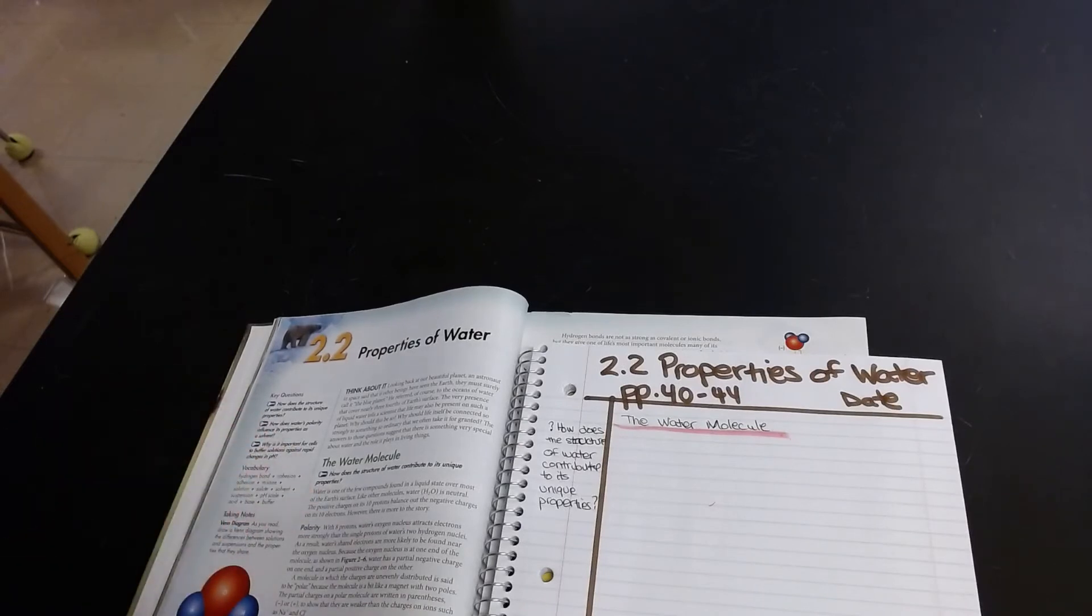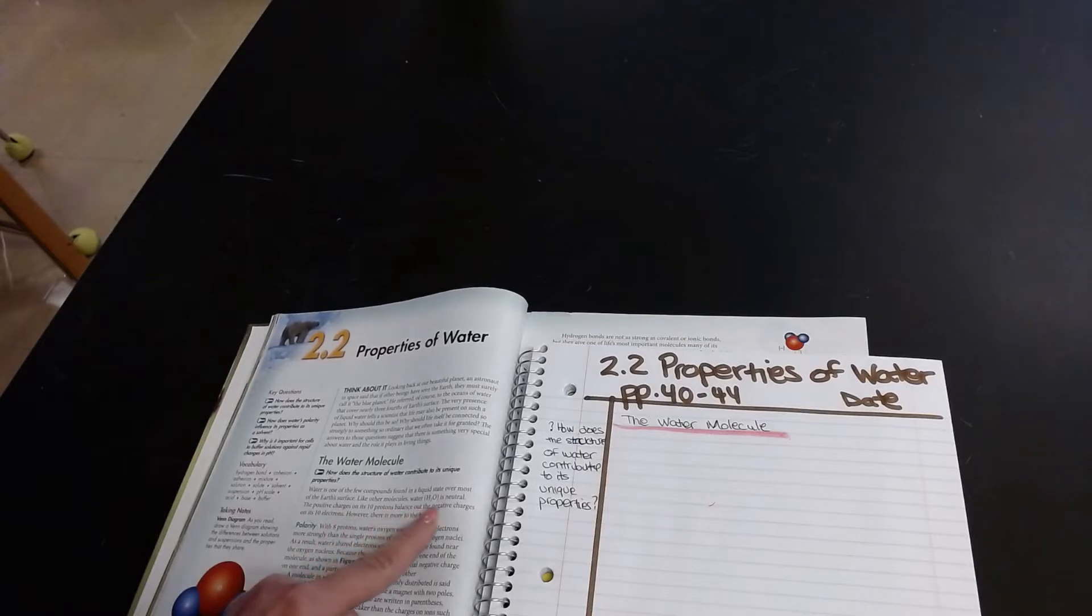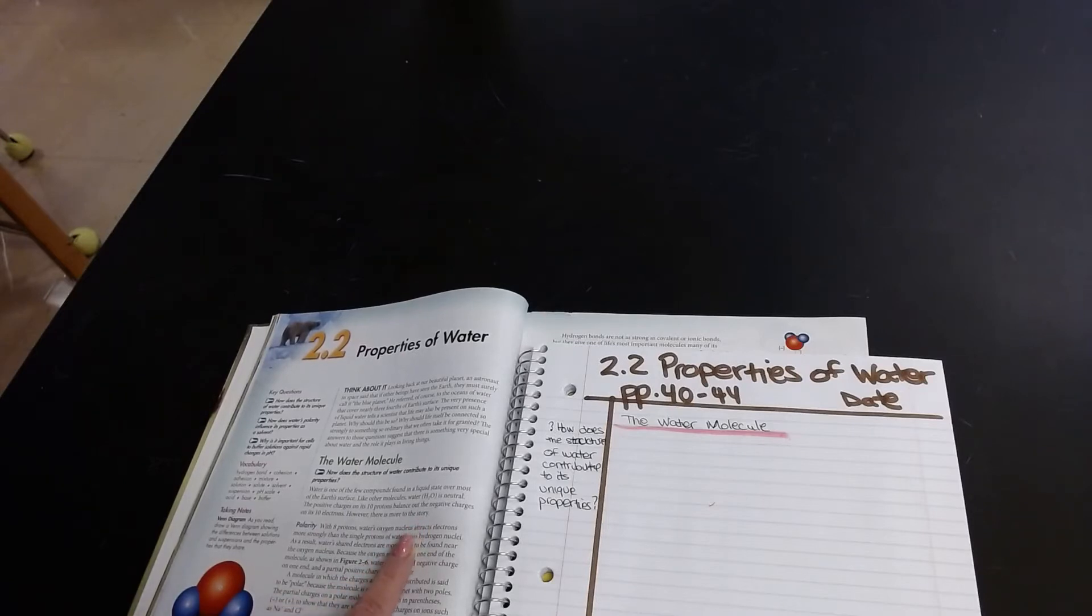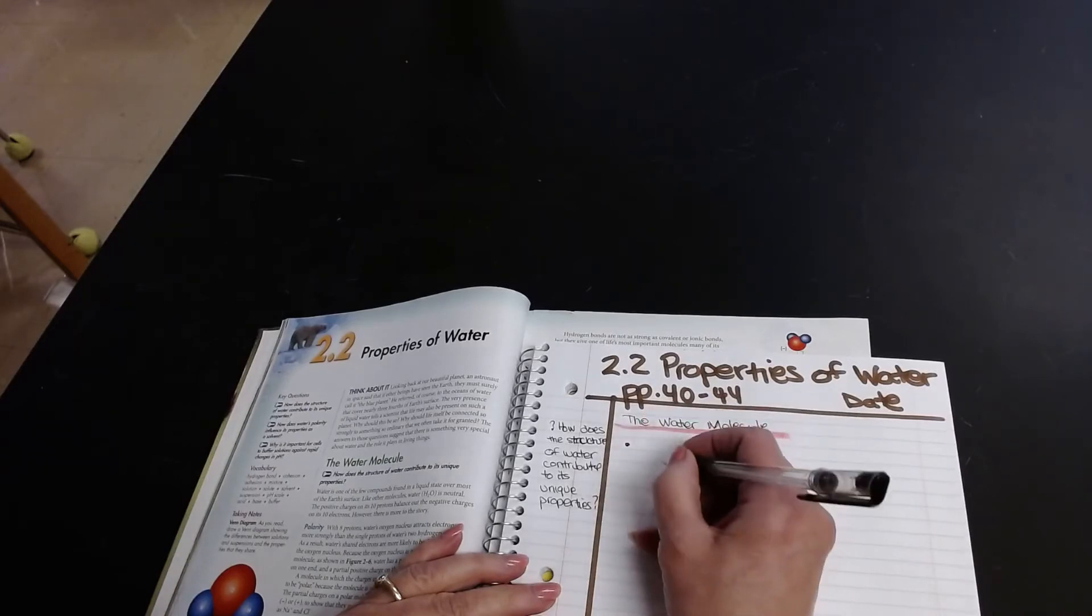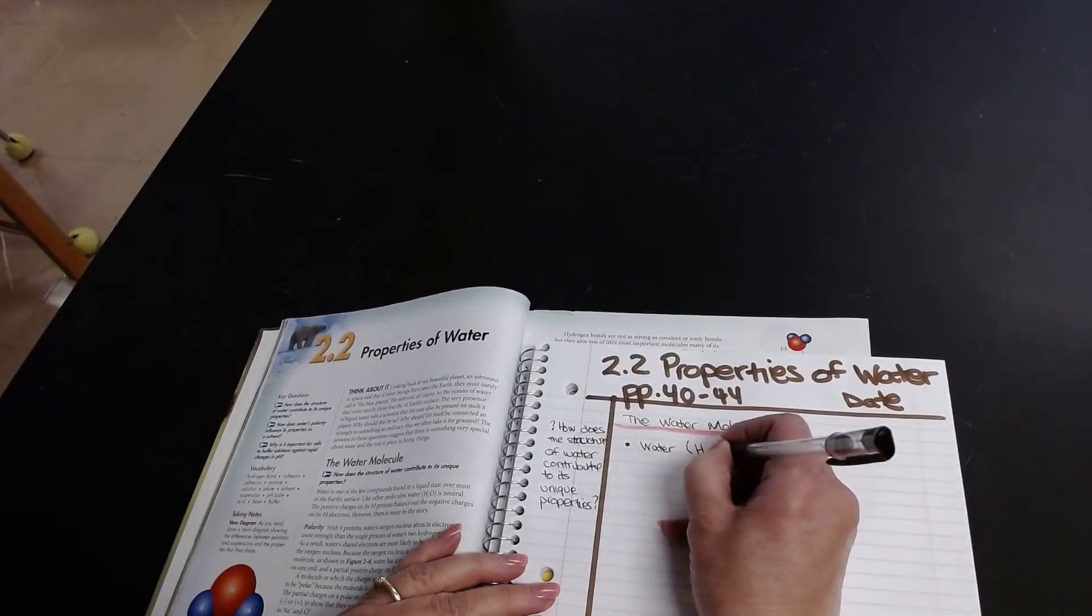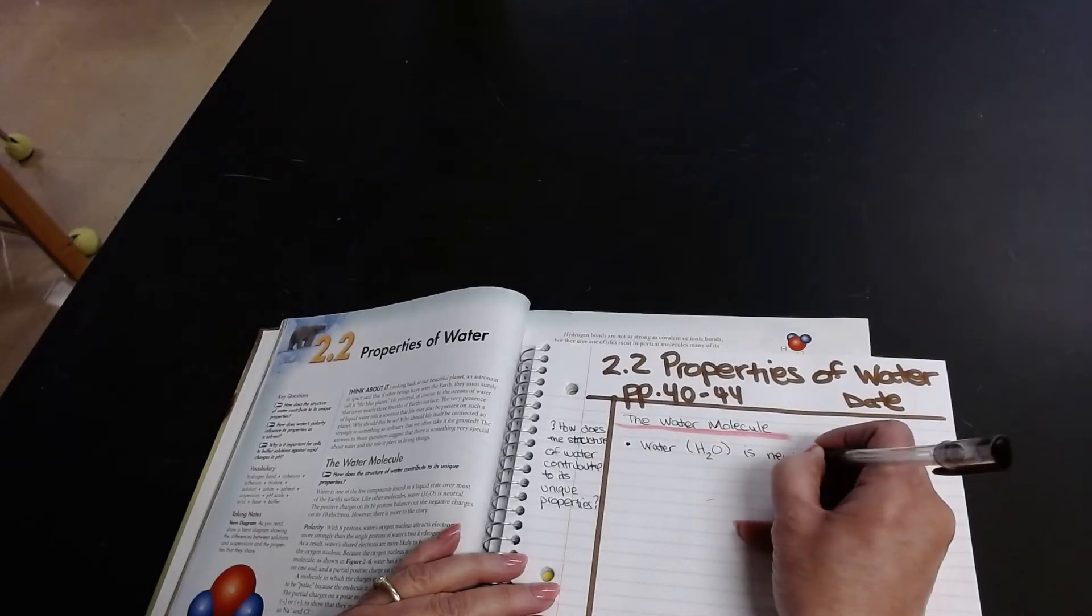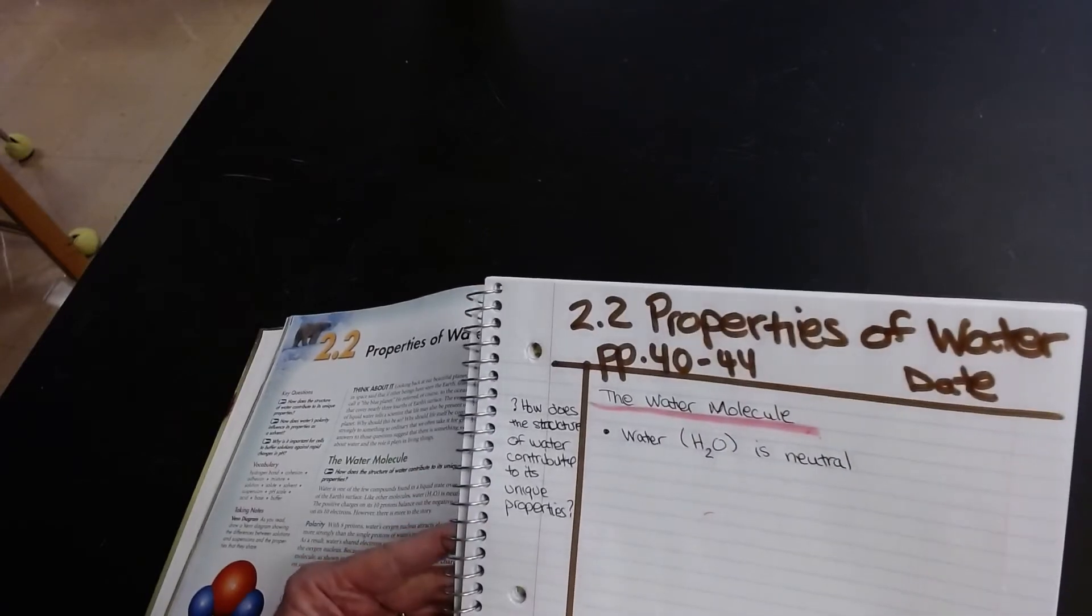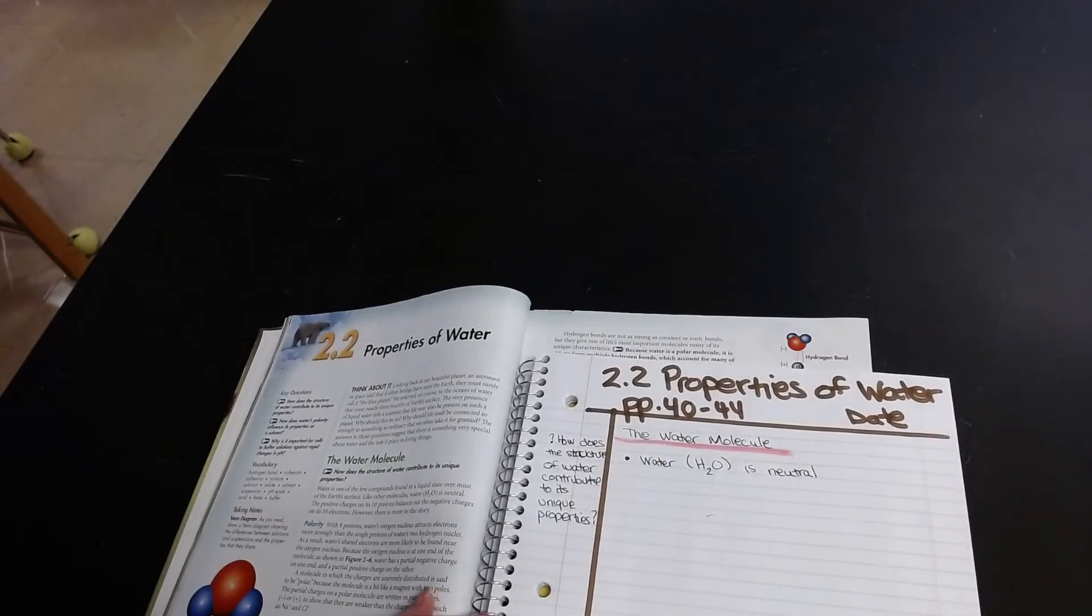Then right under here it says water is one of the few compounds found in a liquid state over most of the earth's surface. Like other molecules, water, H2O, is neutral. The positive charge on its 10 protons balance out the negative charges on its 10 electrons. However, there is more to the story. So what did I understand out of that? I'm going to put a bullet point and I'm going to say water, and in parens I'm going to say H2O because that's a chemical formula for water, is neutral. So for that first section, there's not a lot of reading, but I know it's important.